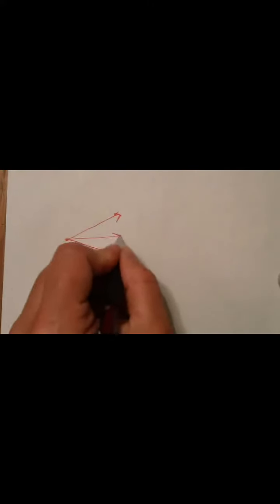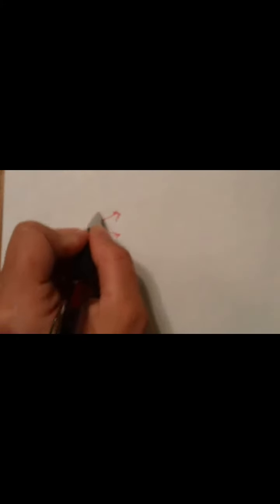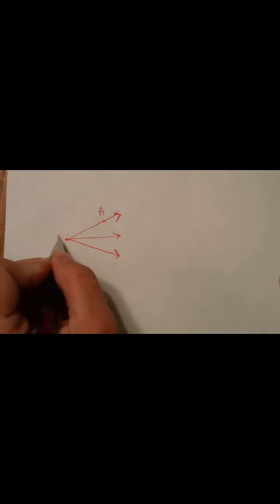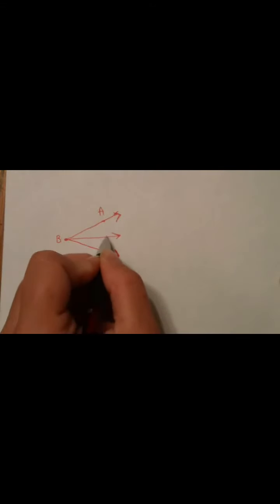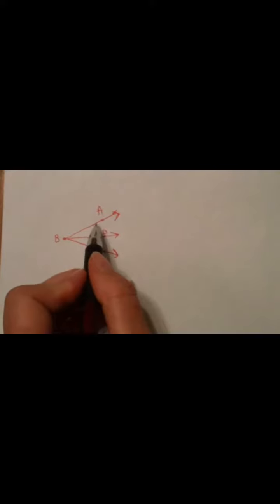Like we saw before in our Naming Angles video, you often have an angle that is made up of two smaller angles. So, let's call this A, B, C, and D. So, this big angle, let's name this big angle.